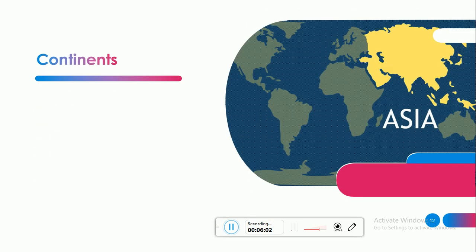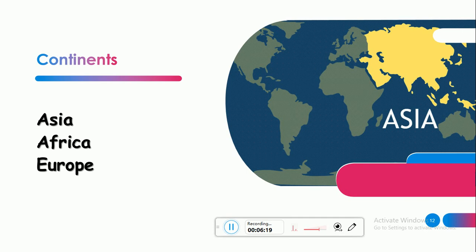Now we will move to continents — القارات. هدي countries, هاي continents. Asia — capital, بس ما في 'the'. No article. Africa, Europe — all of these are continents, فمنحكي عنهم ما بنوخد article. No article, zero article. بس اللي first letter is capital.